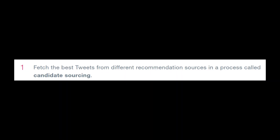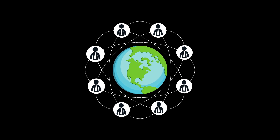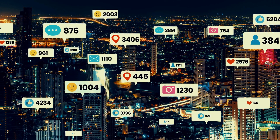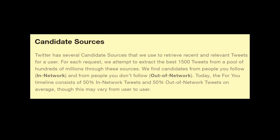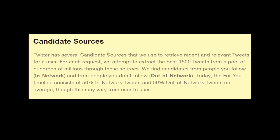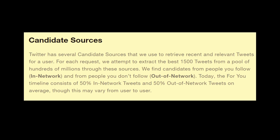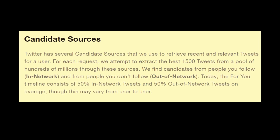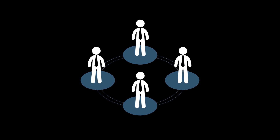The first thing to recommend you any tweet is to fetch the best tweets which are relevant to you. Now there are a lot of people tweeting all around the globe and a lot of people you are connected to. The candidate sources are two: the people you are directly connected with, and 50% comes from the people who you are not connected to at all.